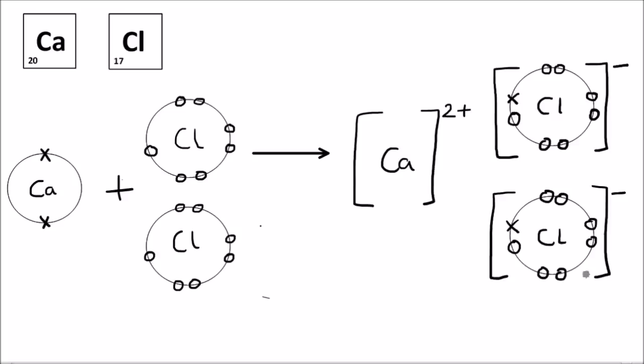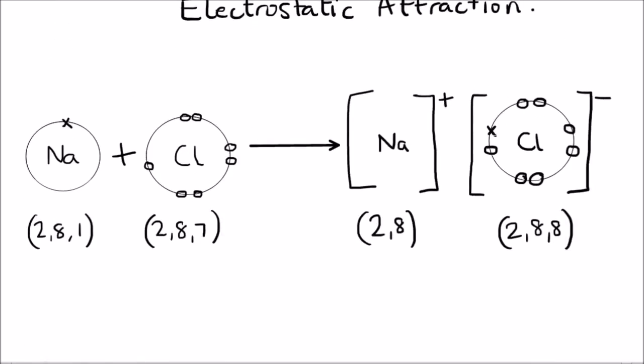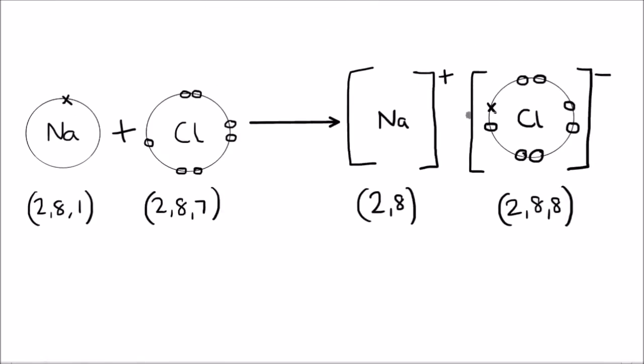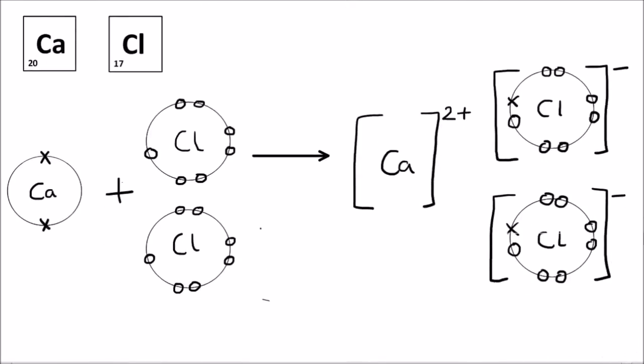And this here is the entire reaction using dot and cross diagrams. Now you may have noticed, if we go back up, that sodium forms a plus one ion and also sodium is in group one of the periodic table. Also, if you look at calcium, calcium forms a two plus ion and it's in group two in the periodic table. So the charge on the metal ion tells you which group of the periodic table it's in.